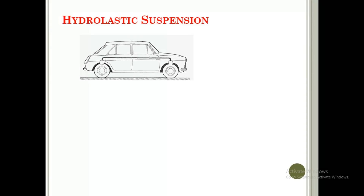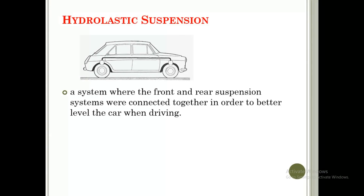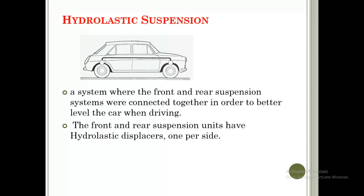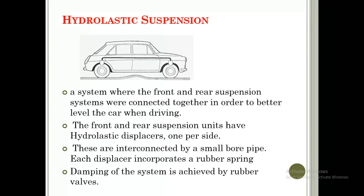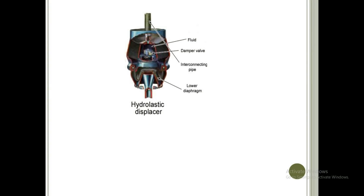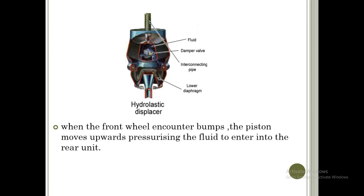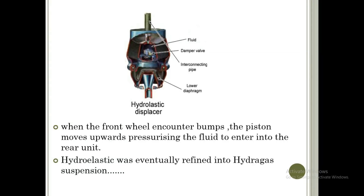The hydroelastic suspension is a system where the front and rear suspension systems are connected together in order to better level the car while driving. The front and rear suspension units have hydroelastic displacers, one per side, interconnected by a small bore pipe. Each displacer incorporates a rubber spring, and damping of the system is achieved by the rubber walls. When the front wheel encounters a bump, the piston moves upward, pressurizing the fluid to enter the rear unit. The hydroelastic system was eventually refined into the hydrogas suspension.